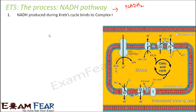NADH produced during the Krebs cycle — and when I say during Krebs cycle, I mean all the steps up to and including Krebs cycle — whatever NADH is produced till now, it binds to Complex 1. So here is Complex 1, and it will bind to this first complex.